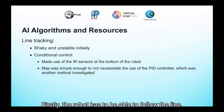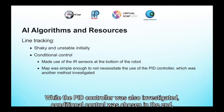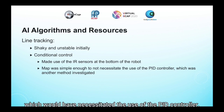Firstly, the robot has to be able to follow the line. Conditional control made use of IR sensors at the bottom of the car to establish the action that would be taken in order to facilitate line tracking. While the PID controller was also investigated, conditional control was chosen in the end as the map was generally simple enough to not require extreme changes in a short period of time, which would have necessitated the use of the PID controller.